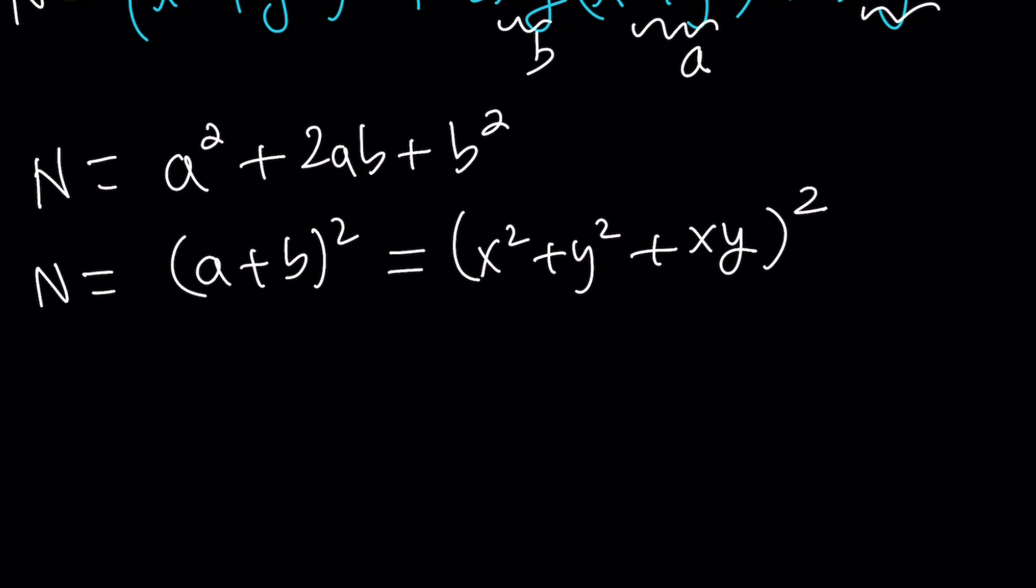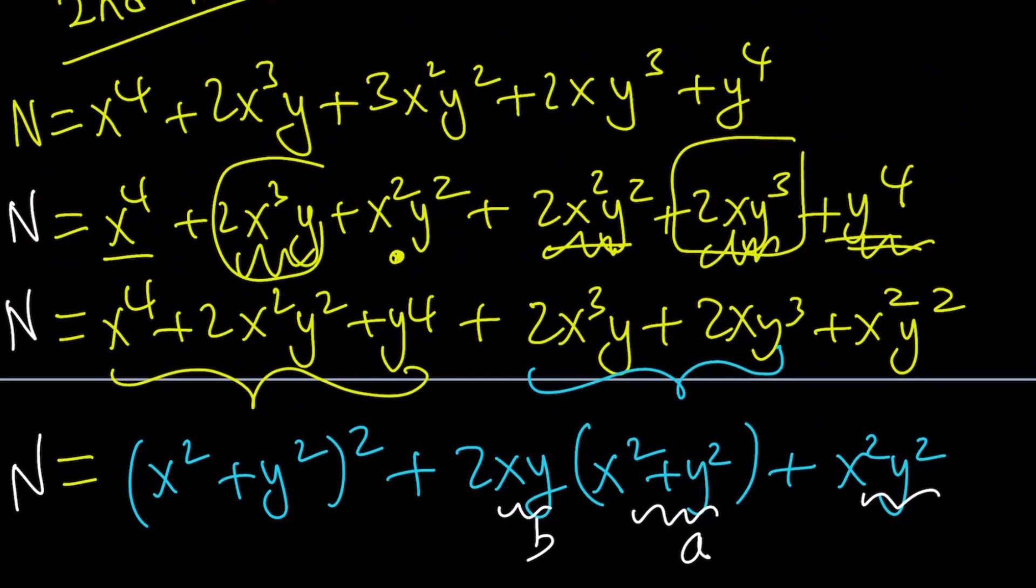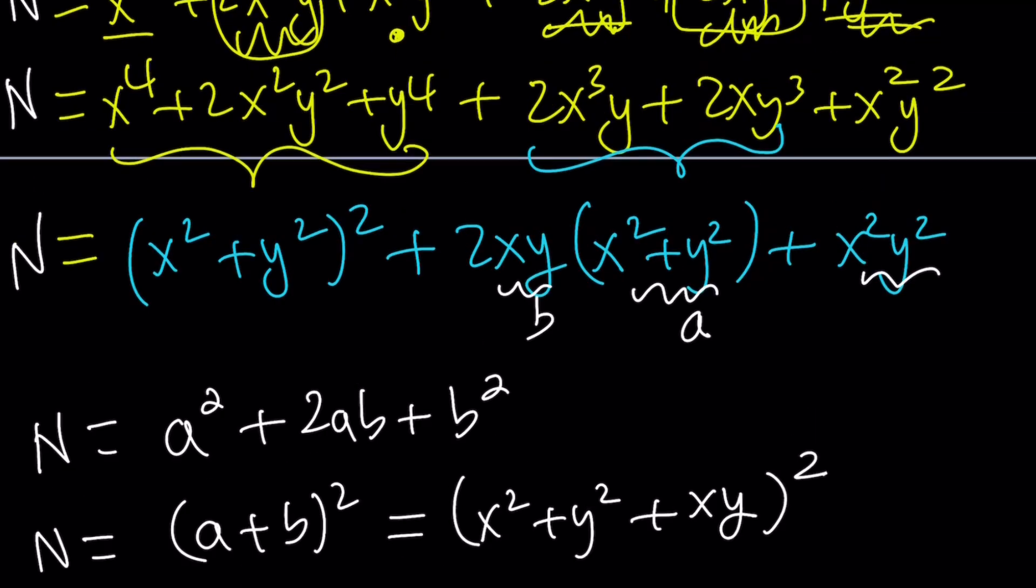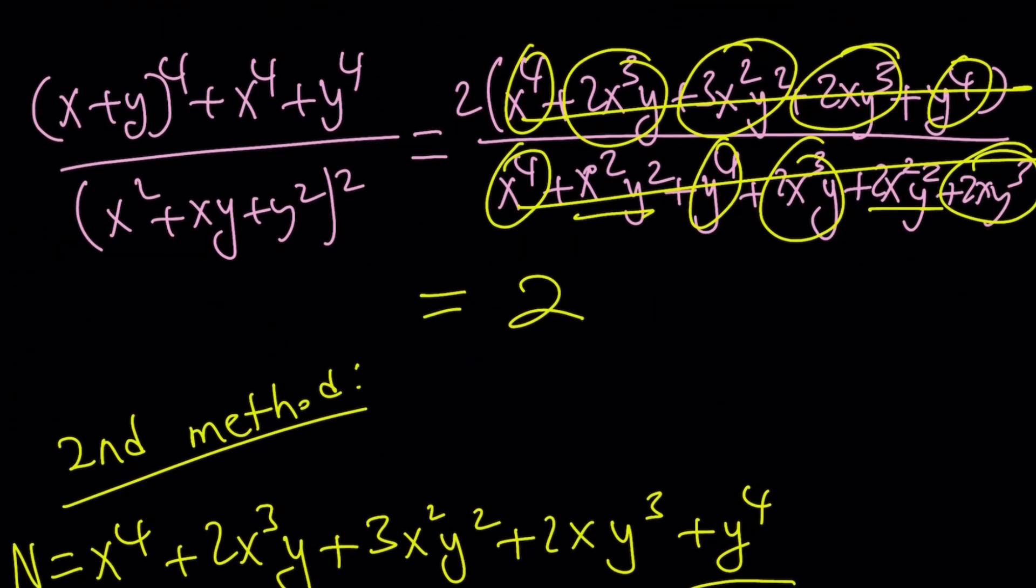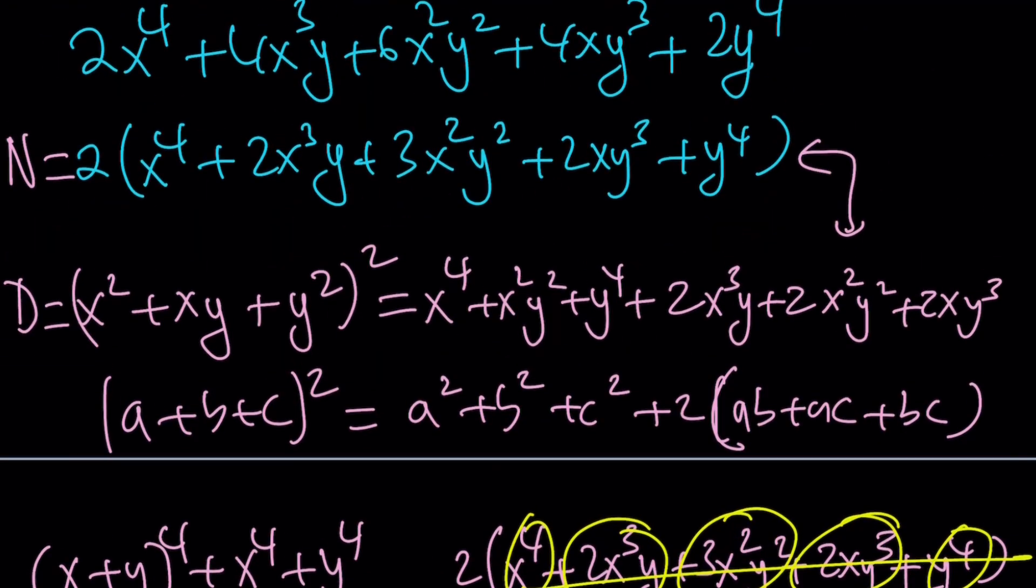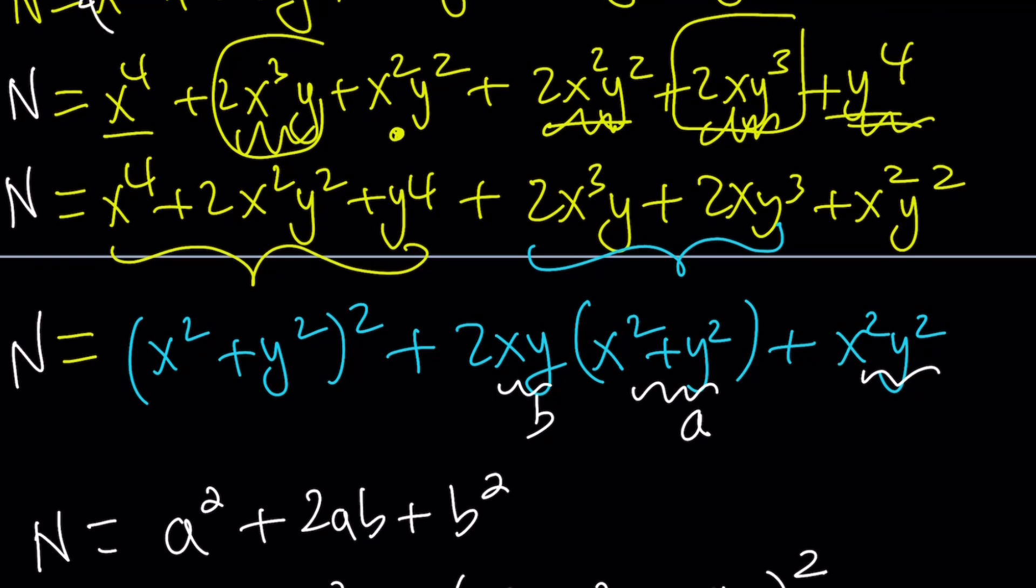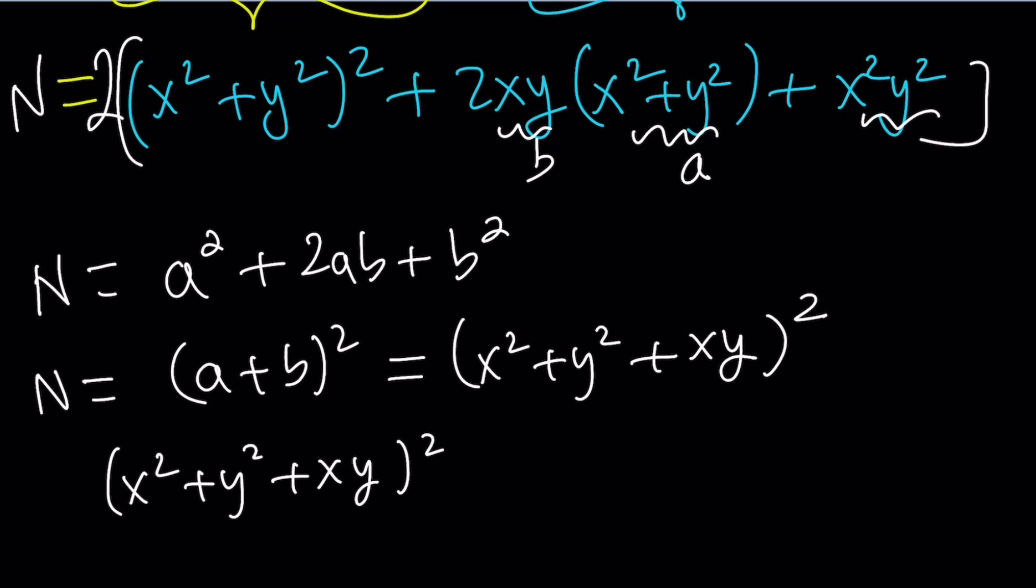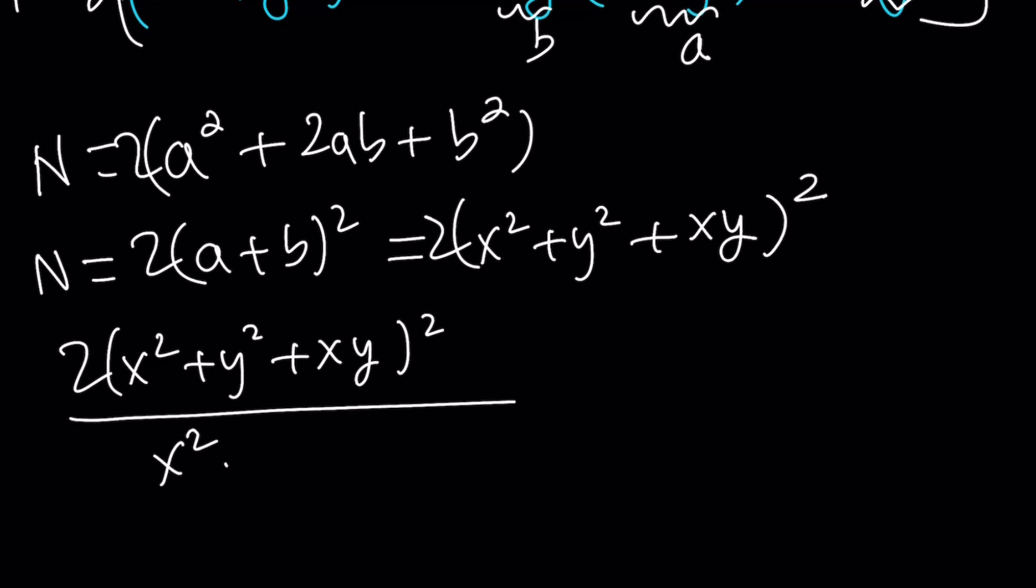And of course, wait a minute. That wasn't actually my numerator. I forgot the 2. There you go. This should have a 2 on the outside. All of these terms should have a 2 outside. So this should have a 2 outside. And totally, this should have a 2 outside. We'll have a 2 here. This is my numerator. And then my denominator is x squared plus y squared plus xy to the second power. These two cancel out, leaving us with 2 at the end.